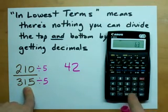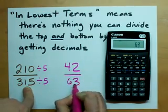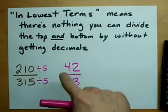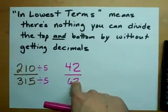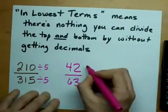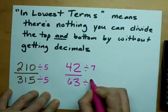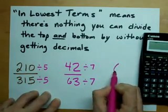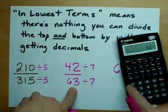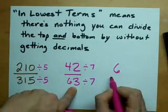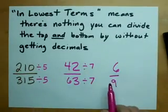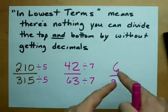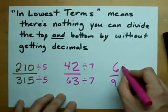315 divided by 5 gives me 63. This is an equivalent fraction. Is there anything I can divide both of these by? Yes — 7. 42 divided by 7 gives me 6, and 63 divided by 7 gives me 9. This is another equivalent fraction. We haven't gone into decimals, so we're getting into lower terms. Can we divide both of these by 3? Yes we can.